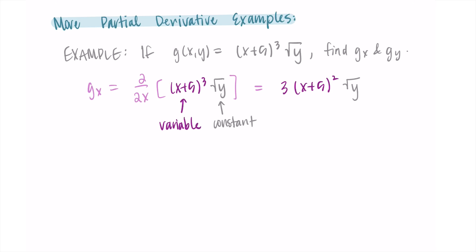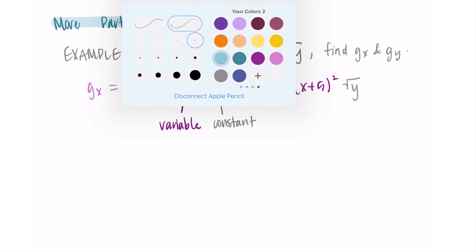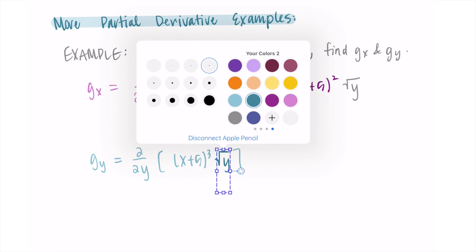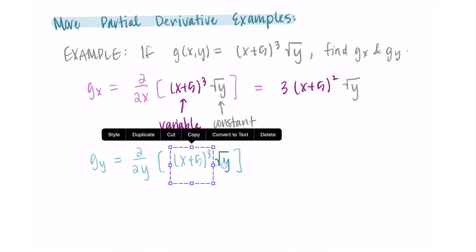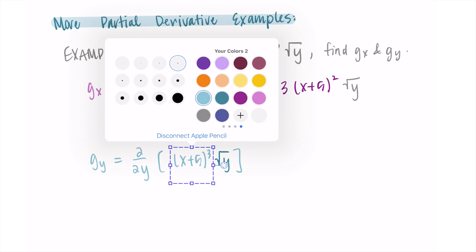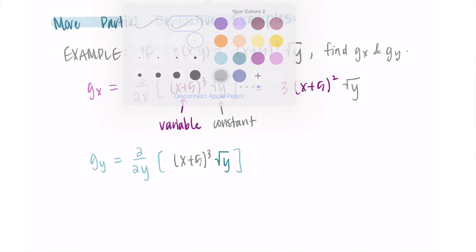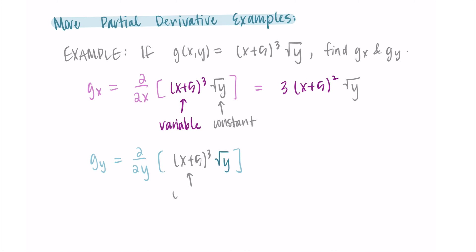That's our derivative with respect to x. Now let's do the derivative with respect to y. We're taking the partial derivative with respect to y of x plus 5 cubed times the square root of y. Now our roles switch — the square root of y is now our variable and the x plus 5 cubed is now our constant. Rather than using the product rule, it's really just a constant times something.